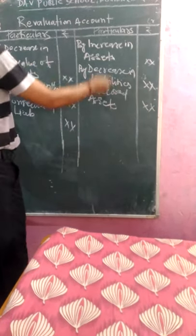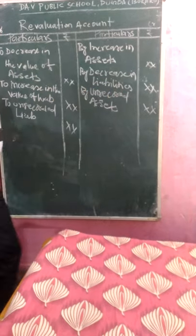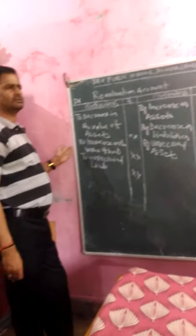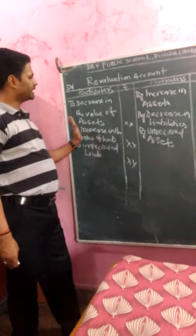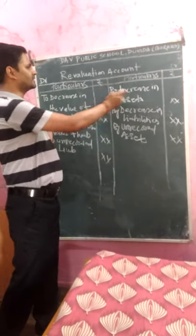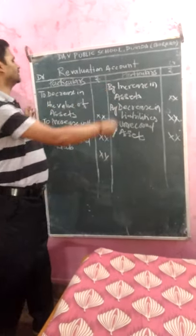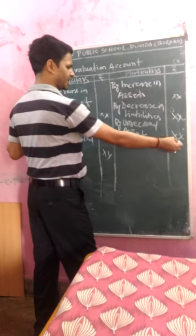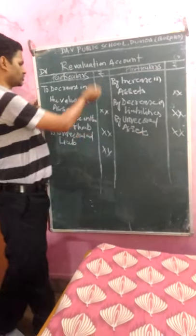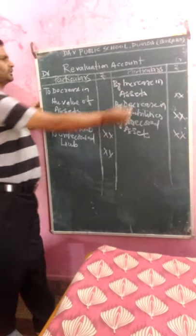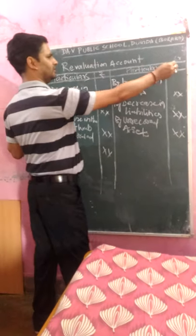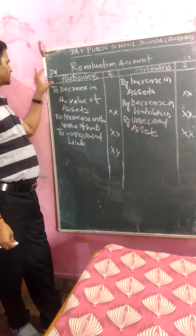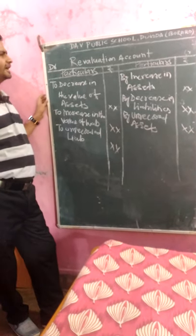Now, you have to balance the Re-Valuation Account. First, find the total of the Credit side and the total of the Debit side. If the total of the Credit side exceeds the total of the Debit side, it will be a profit on revaluation.